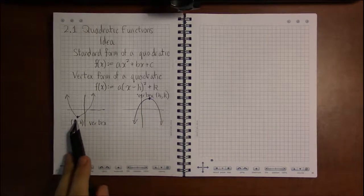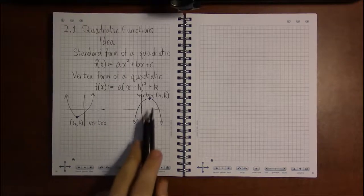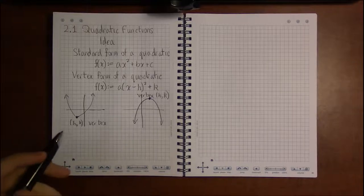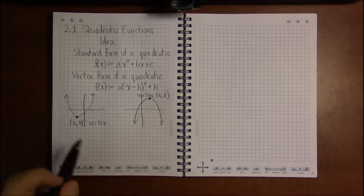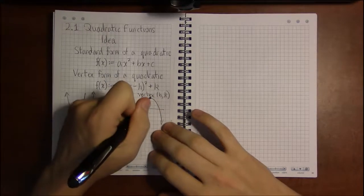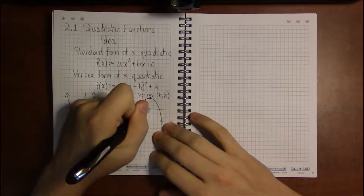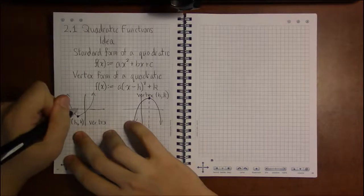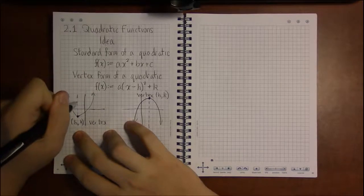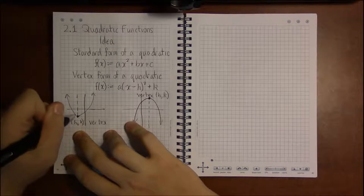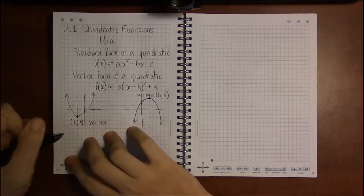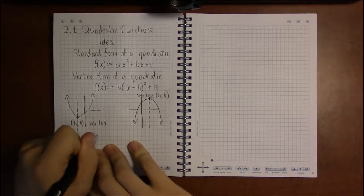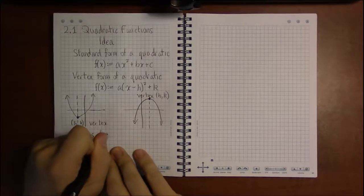Some other features to note about quadratic functions and their parabolas is that they're symmetric. Generally, they're not even or odd, but they do have what we call an axis of symmetry.